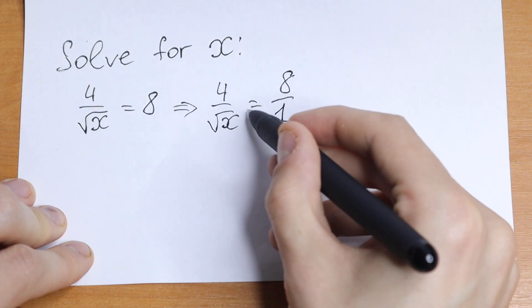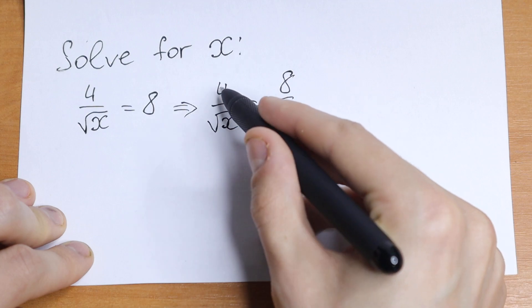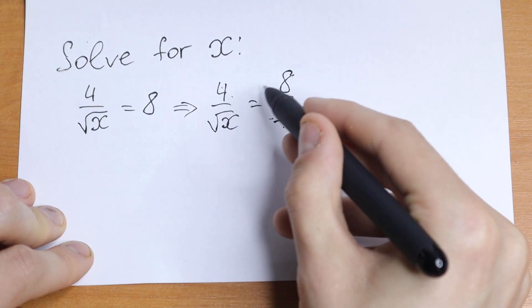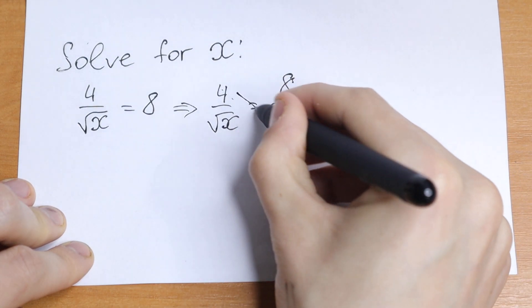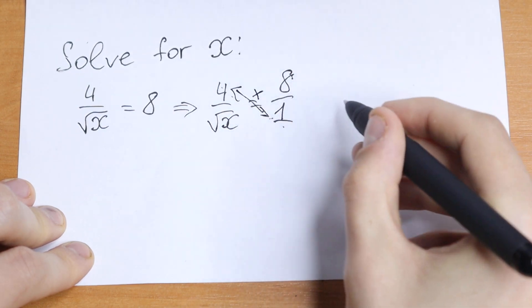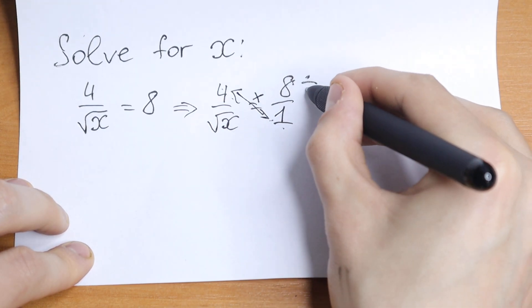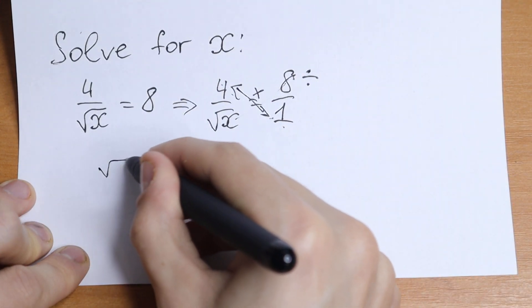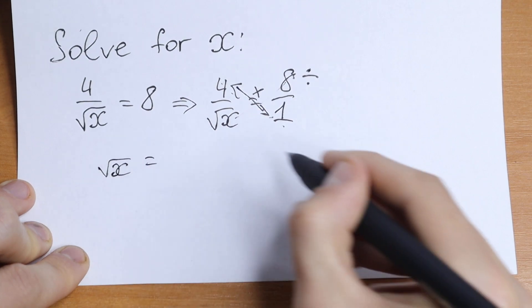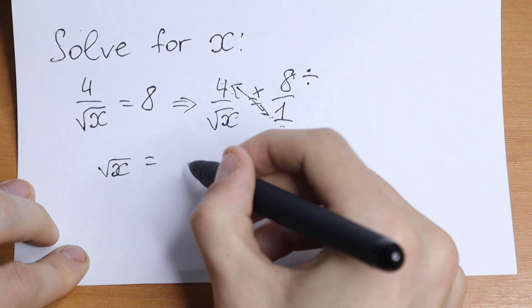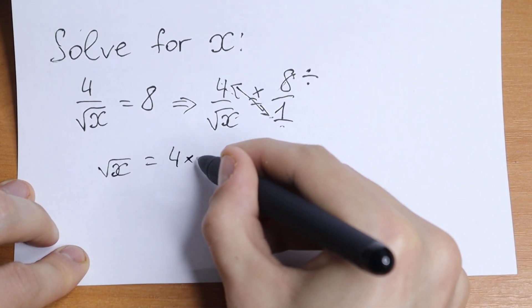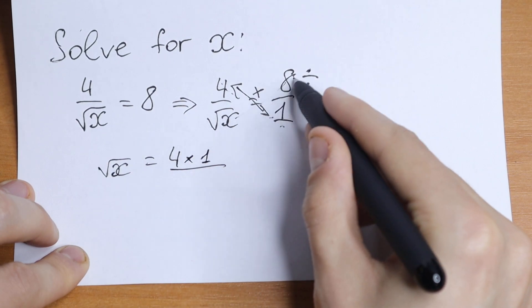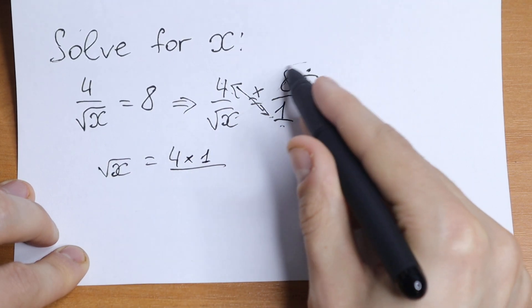So if you want to find this square root of x from here we need to multiply these numbers and divide by this one. So right here we are multiplying and dividing by this number. So as a result we'll have square root of x equal to this one, multiplying 4 times 1 and dividing by this 8.